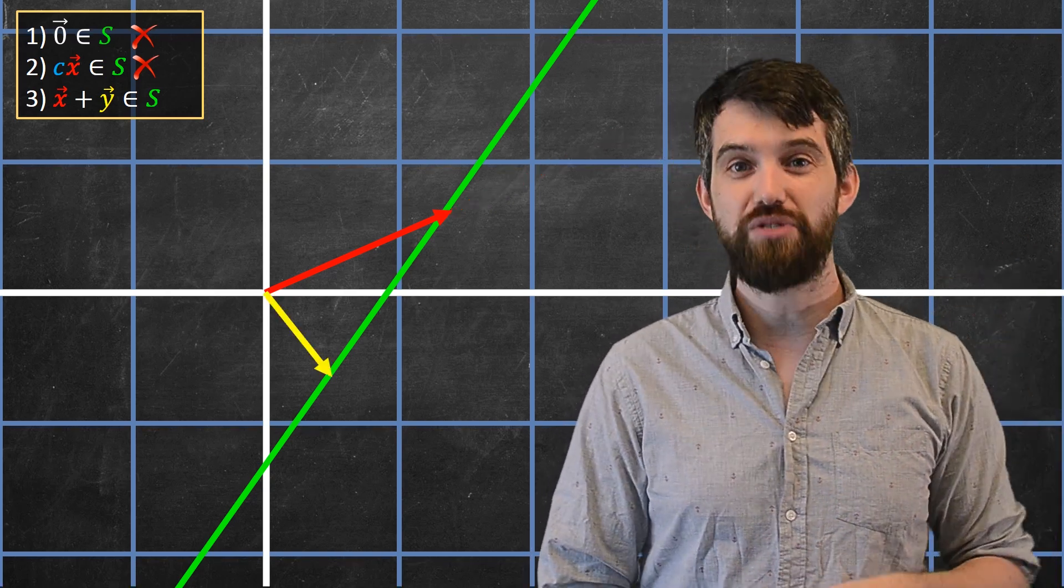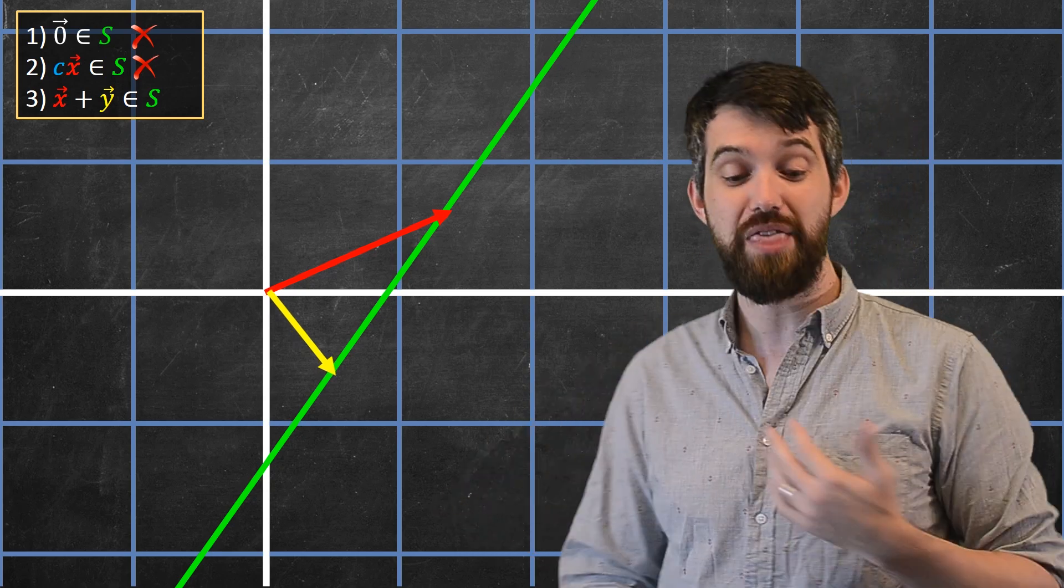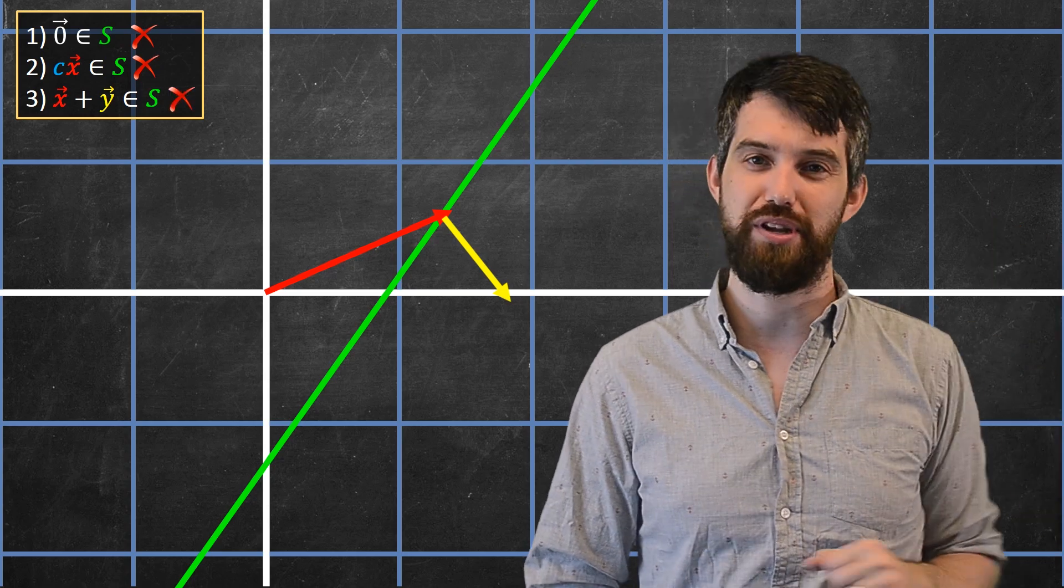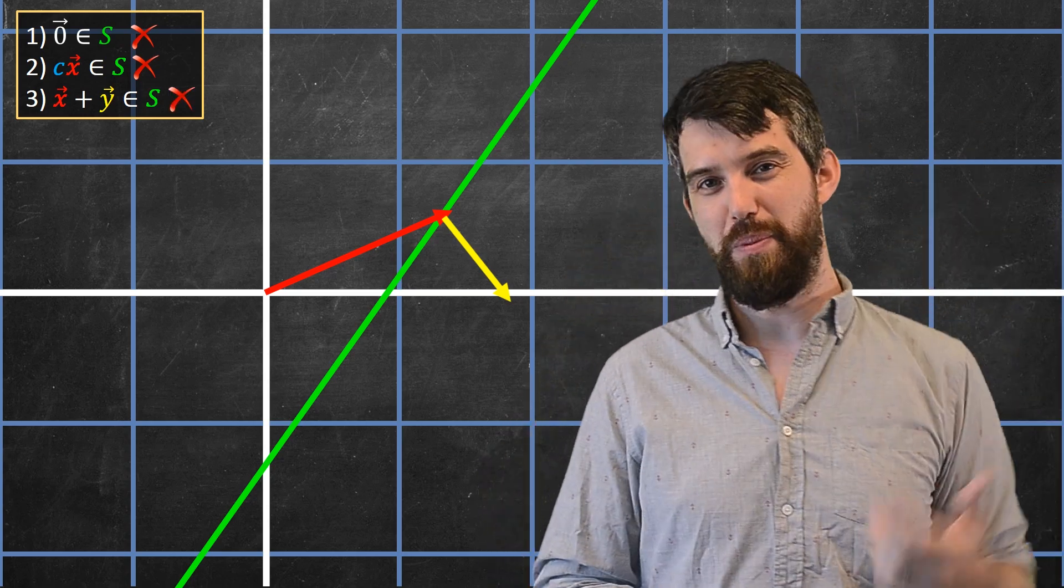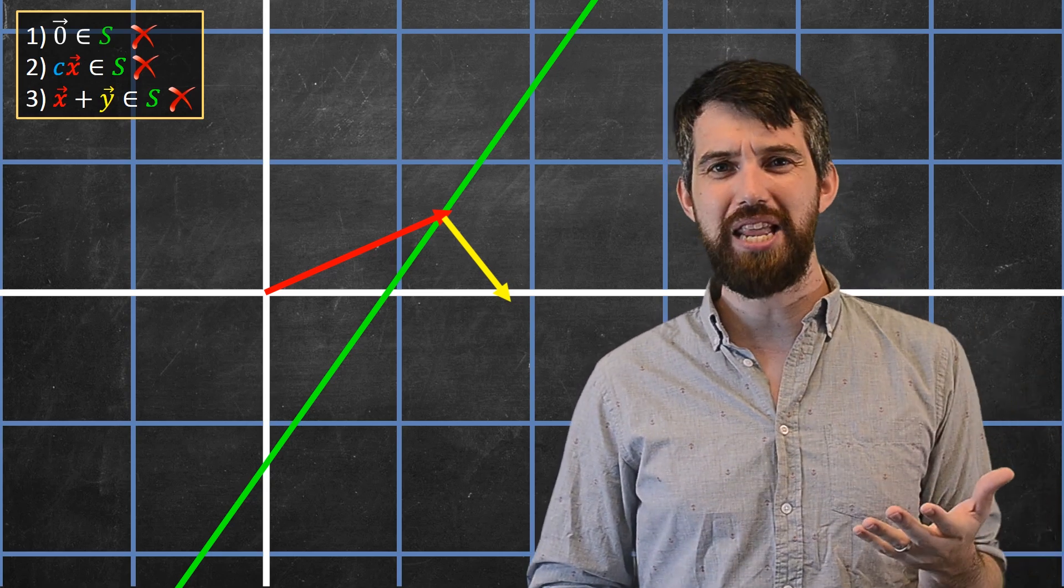Alright, what if I take one vector on the line and a second vector on the line? Well okay, if I want to add them, I have to add them up in my tip-to-tail way, and again I get off the line, and so my third property is false. So a line not through the origin is really not through the origin. It wasn't just this first property that violated it.